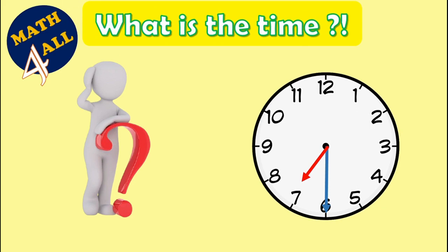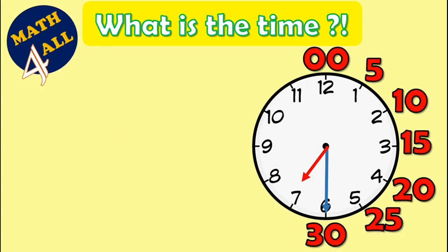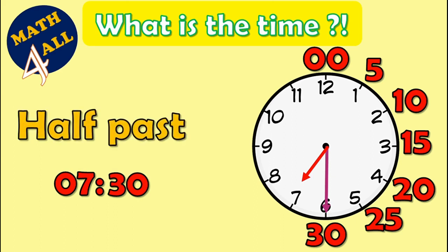Now it's your turn — can you tell me what is the time here? Look at the short hand, or the hour hand — it's on 7. And the minutes hand, or the long hand, is on 6, so it means it's 30 minutes. So it's 7 and 30 minutes, or it's half past seven. Good job!